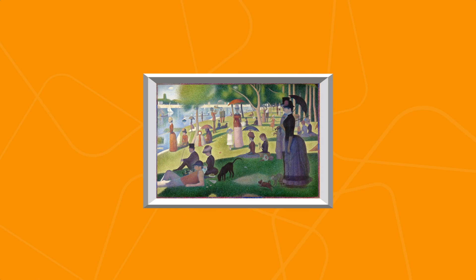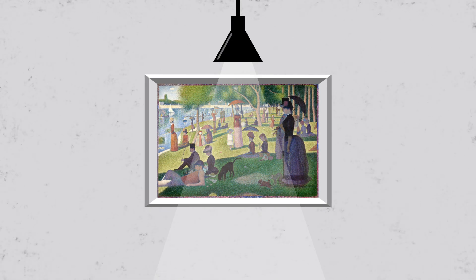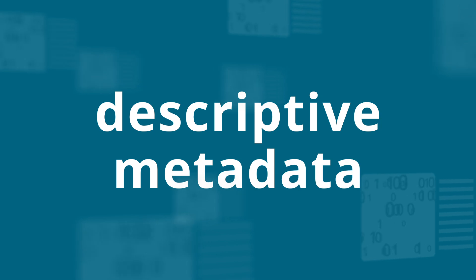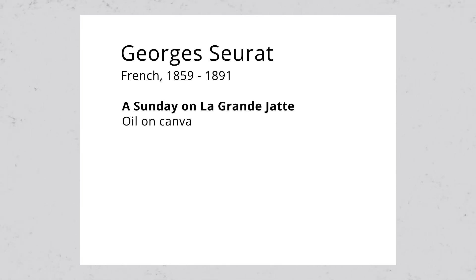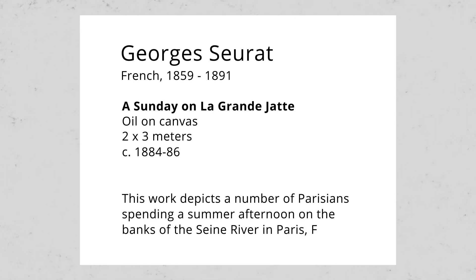But what if you wanted to hang this picture in a gallery? Where would you start? You'd start with descriptive metadata. This is the basic information — the who, the what, the where, the when of something. For a painting like this, we'd start with the artist's name, where and when he was born, the title, what it's made of, the size of it, when it was made, and some kind of brief description. Now we have enough information, or metadata, for a little placard to go with the painting, so visitors know what they're looking at.